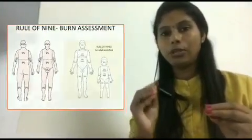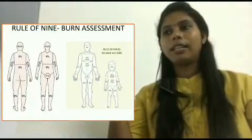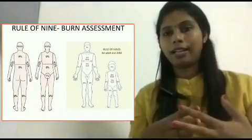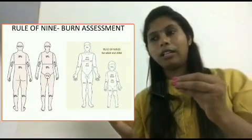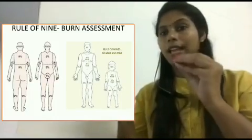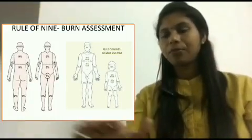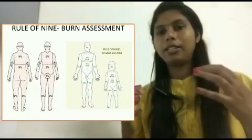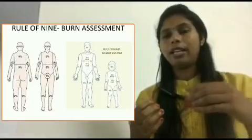Good morning friends. Today we are going to discuss the Rule of Nine, which is one of the standard formulas used for calculating the total body surface area of burns. In the previous video, I discussed the types of burns, and now we will discuss the formula for calculating the total body surface area or the percentage of the body affected. The Rule of Nine can be used for both children and adults, but there will be a slight variation in percentages.